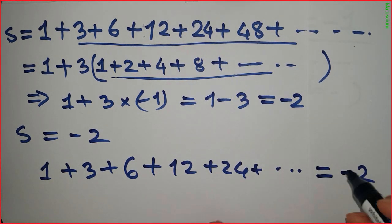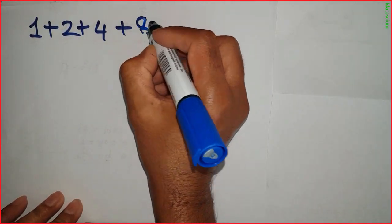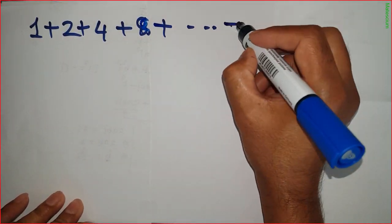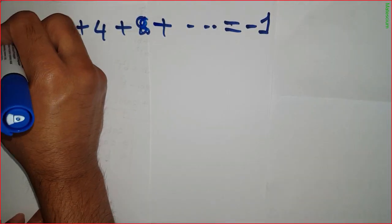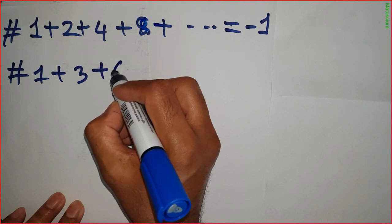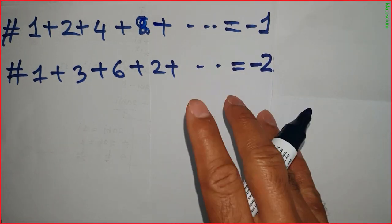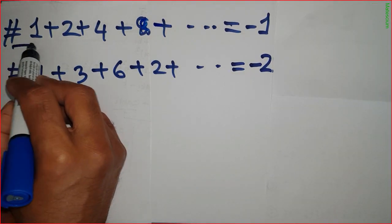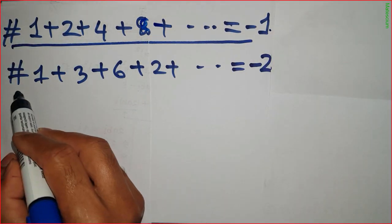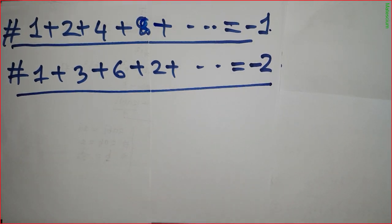So 1 plus 3 plus 6 plus 12 plus 24 plus dot dot dot equals minus 2. Is it not interesting? This is totally a strange proof. I proved the first series equals minus 1 and this series equals minus 2. If you know where exactly I made the mistake, you can write it in the comment section. Thank you so much for watching, and see you next time. Bye-bye.